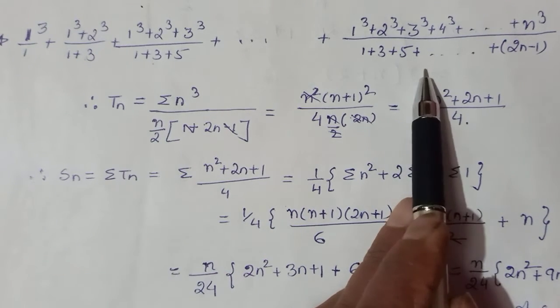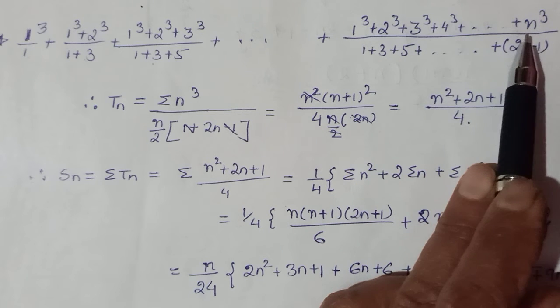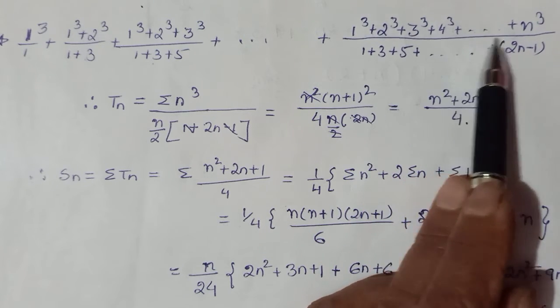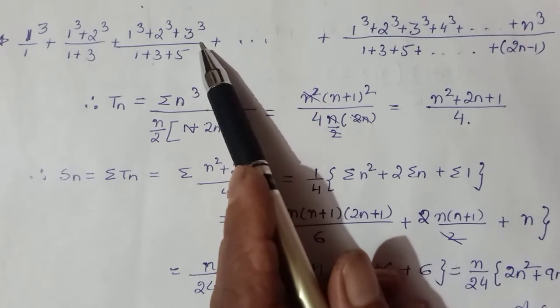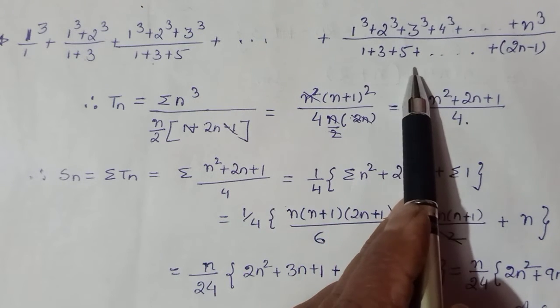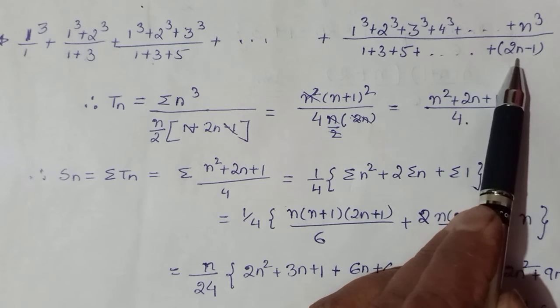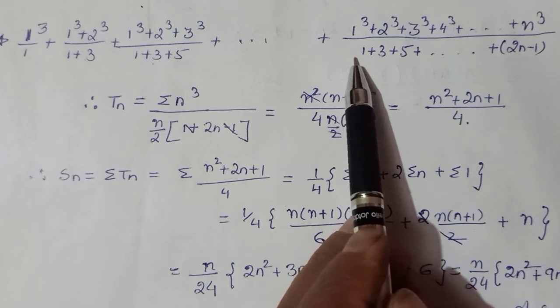Yes, sum aapka sum of cubes aega up to n, jo wala term tha waha takka sum aa raha tha. And odd numbers were coming, so for nth term it will be 2n - 1. This is of the form 2n - 1. So if this is your Tn, now numerator, if you see for the nth term.